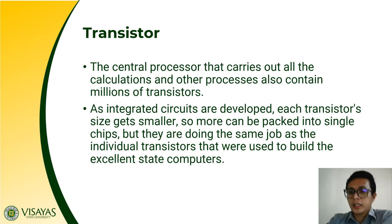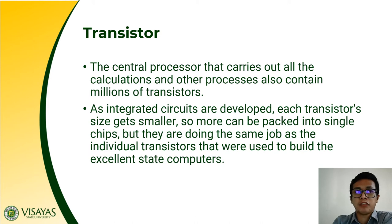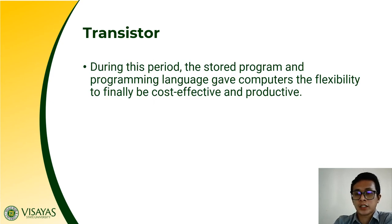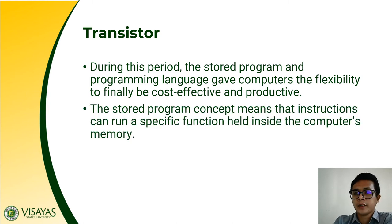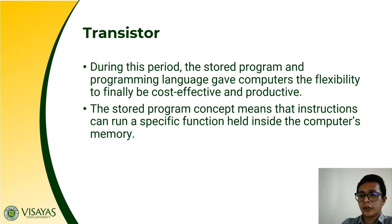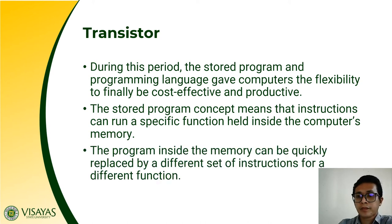As integrated circuits were developed, each transistor's size got smaller so they could be more packed into a single chip, doing the same jobs as individual transistors used to build first-generation computers. During the second generation, the stored program and programming language gave computers the flexibility to finally be cost-effective and productive. The stored program concept means that instructions can be run on specific functions held inside the computer's memory. Computers in the second generation were capable of executing programs and quickly replacing stored instructions for different functions.